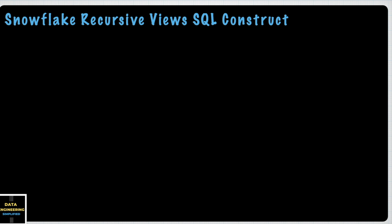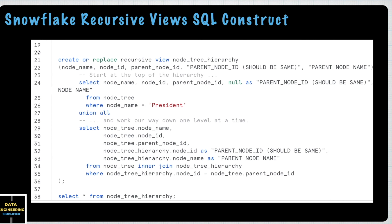To recap the SQL construct of a recursive view: to create one, use the RECURSIVE qualifier and make sure you have a UNION clause within your view definition. This way you can join and refer the view itself, building recursive and complex logic which can be a replacement for your common table expression.